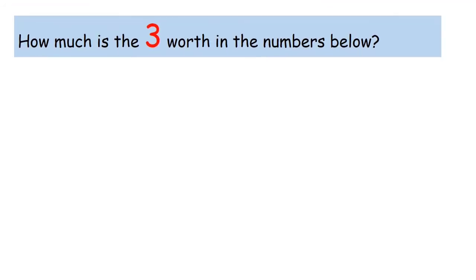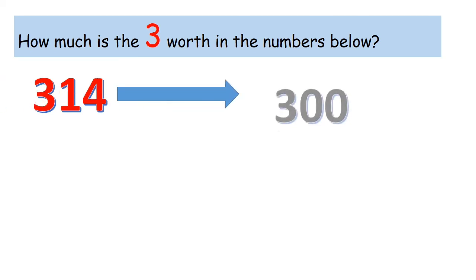Okay, let us now do the next exercise. How much is the three worth in the numbers below? Three hundred and fourteen. Four at the ones place, one at the tens place, and three at the hundred place. So, the three is three hundred. Very good.